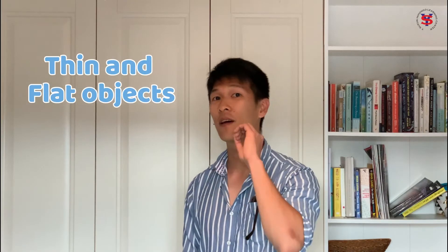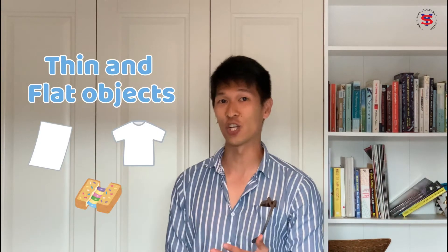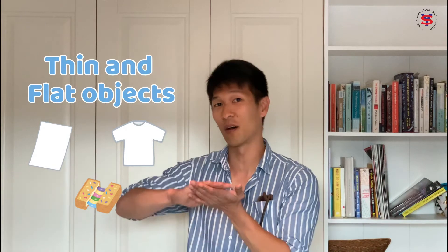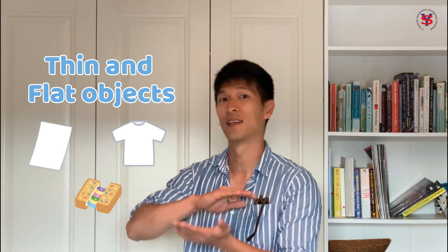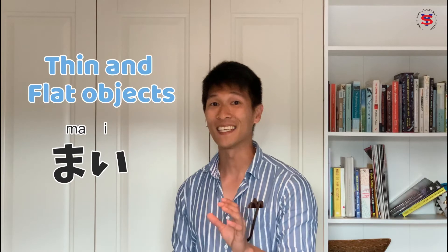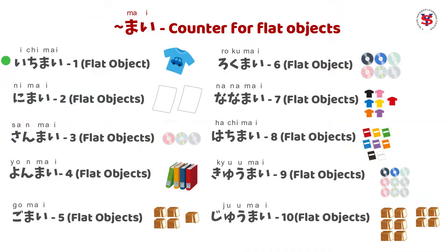Now we have Thin and Flat Objects — parang katulad ng let's say paper, shirts, dishes, etc. Flat siya. So the counter suffix is mai. As in: ichi-mai, ni-mai, san-mai, yon-mai, go-mai, and so on.